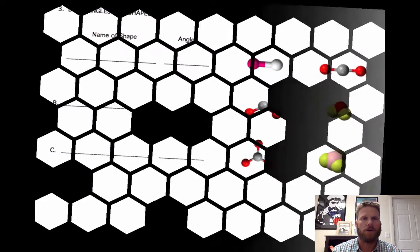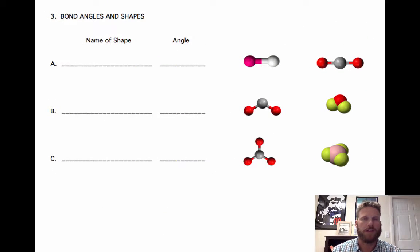We can also talk about covalent molecules and their geometries or shapes. So I have some diagrams here in the notes on the right. We can look at the shape of those molecules and their bond angles.